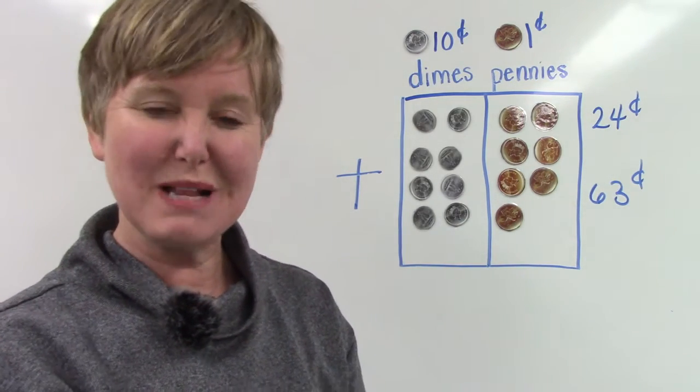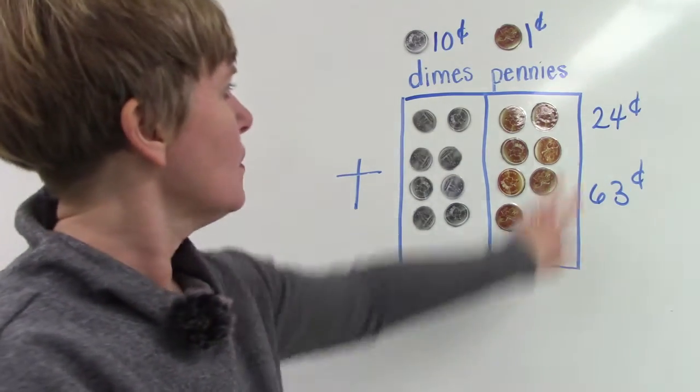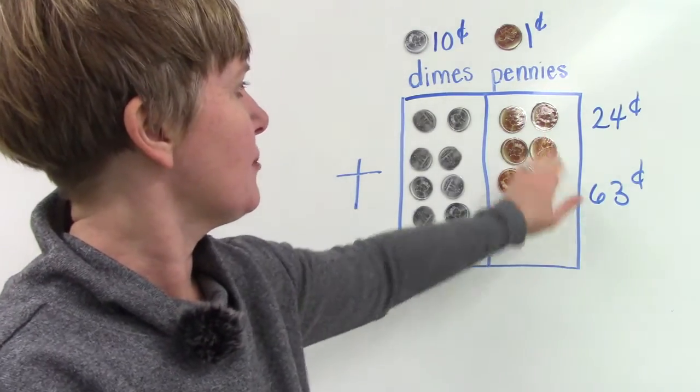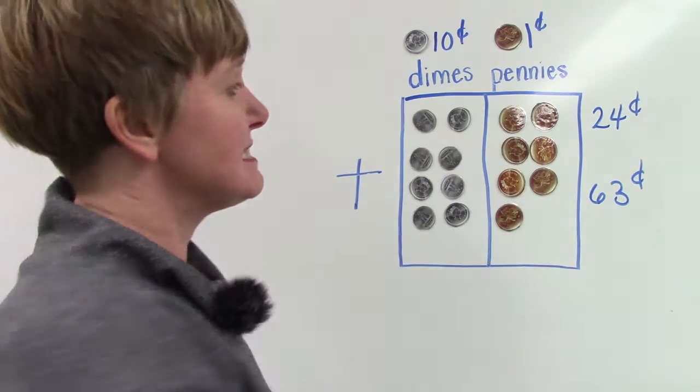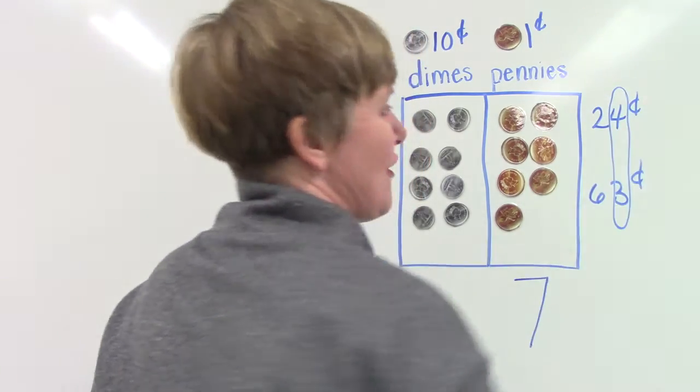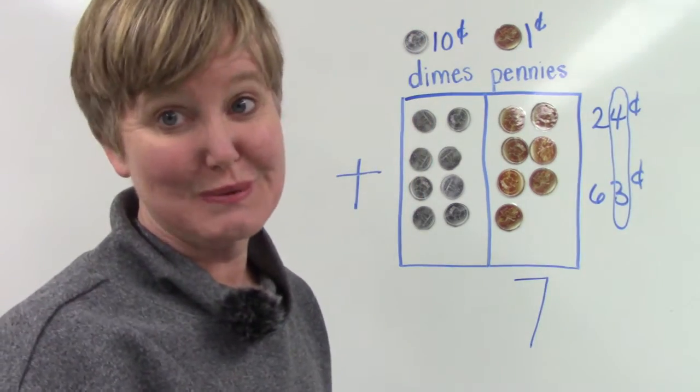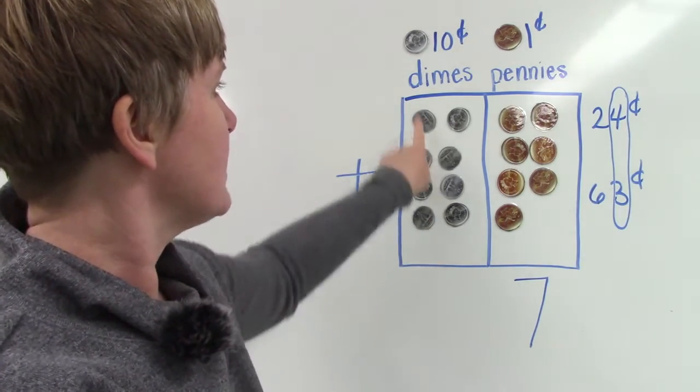24 plus 63, let's find the answer. We're going to start over here with our pennies. We have 1, 2, 3, 4, 5, 6, 7 - that's because 4 plus 3 equals 7.